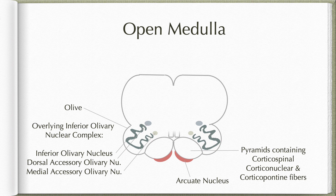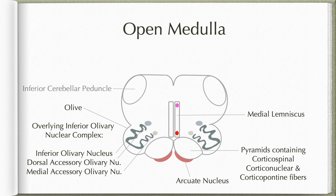Behind the pyramids on either side of the midline, we have the medial lemniscus containing sacral fibers anteriorly and cervical fibers posteriorly. The dorsolateral angles of the medulla show a collection of large fiber bundles at this level known as the inferior cerebellar peduncle. These inferior cerebellar peduncles are also capped by another set of displaced pontine nuclei known as the pontobulbar body.